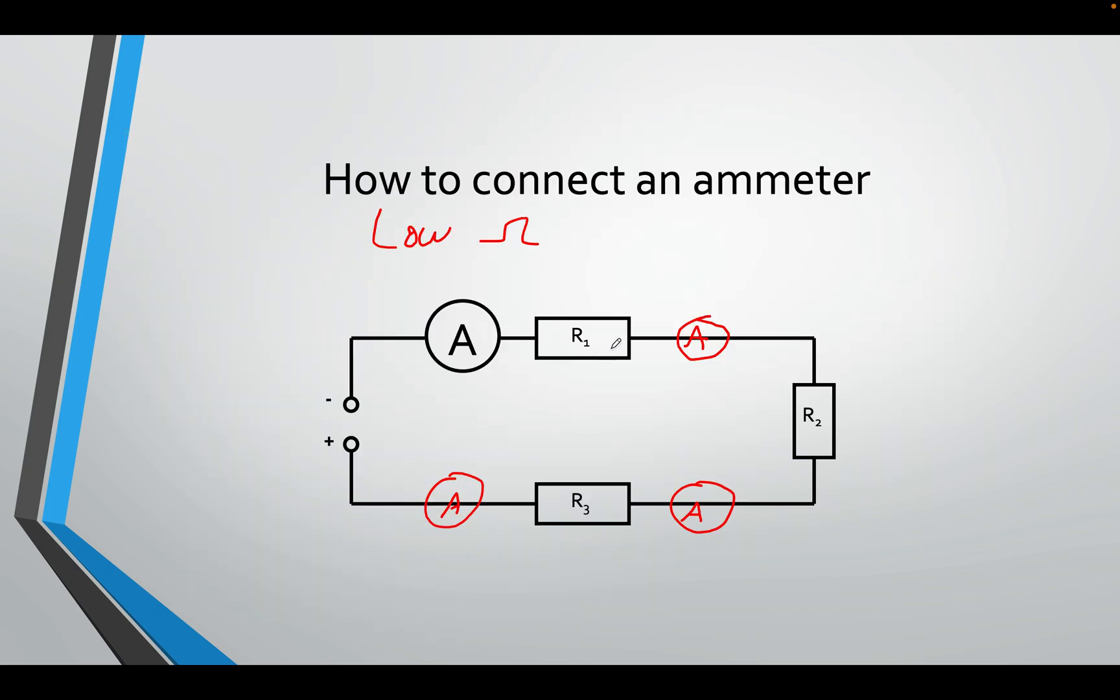So moving on. If you want to connect an ammeter, make sure you know that it is in series. It could be anywhere in the circuit, and the number will be the same. It needs to have a low resistance, because we want electrons to flow through it. We want the energy to flow. We want these things to go without any problems, because I want to measure how many electrons are flowing through the circuit, from positive to negative, conventional.